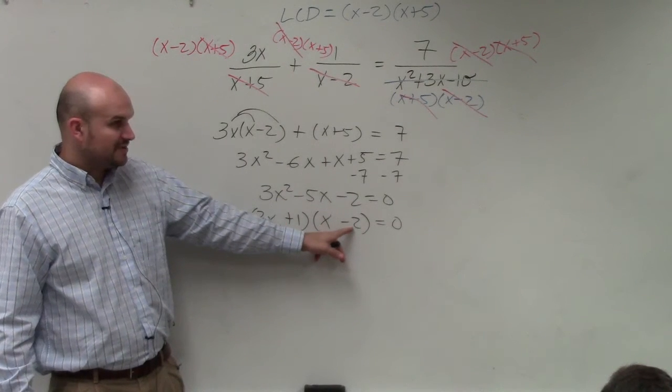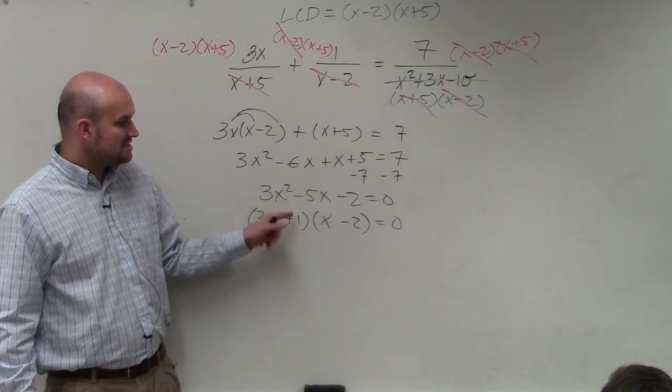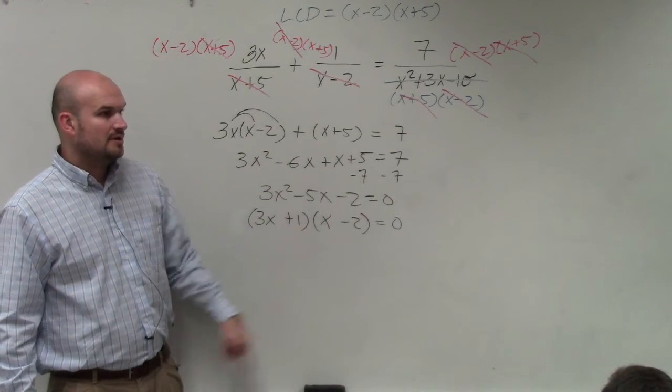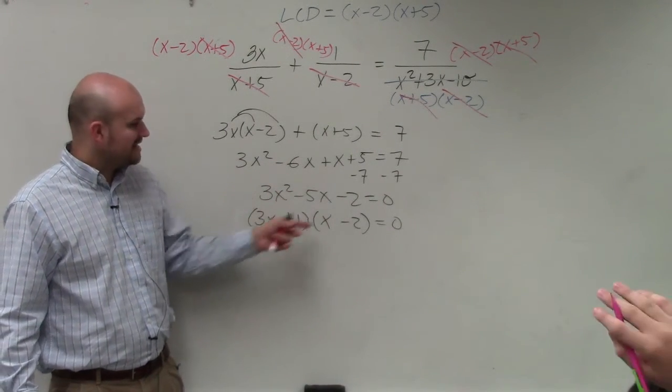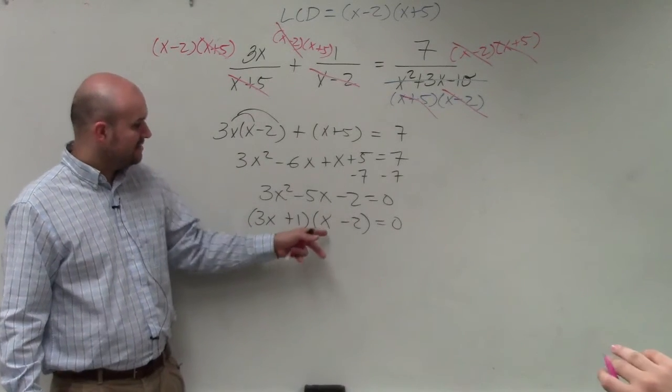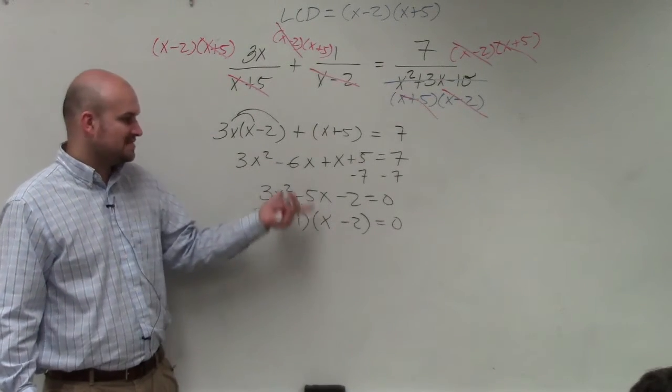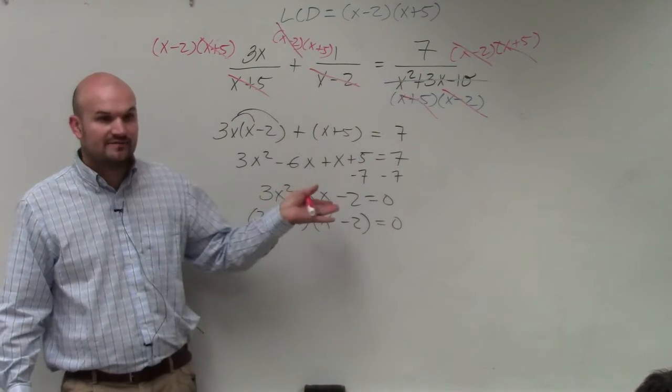Does 3x times negative 2 give you negative 6 plus 1 times x gives you negative 5? Or sorry, 3x times negative 2 is negative 6x. That's 1x. Negative 6x plus 1x is negative 5x. Yes.